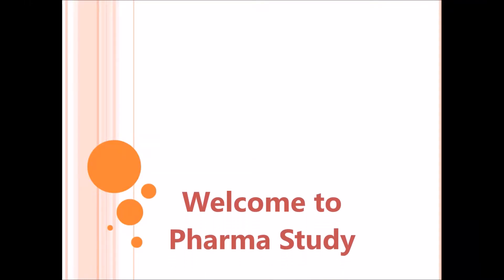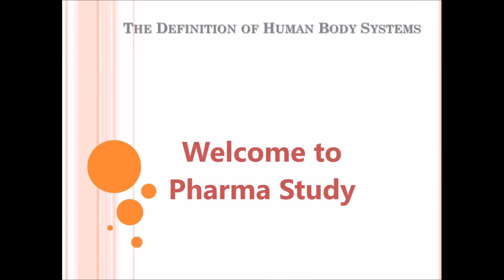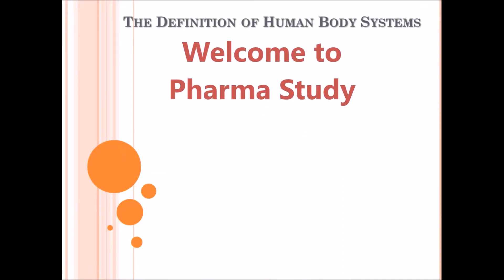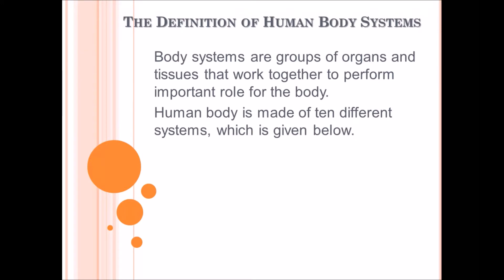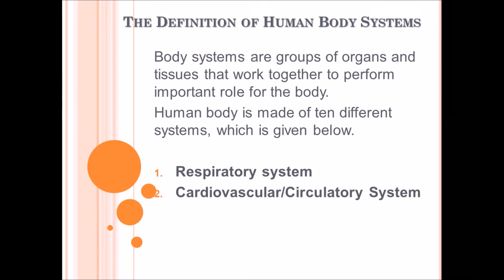Today we will discuss the definition of the human body system. A body system is a group of organs and tissues that work together to perform important roles for the body. The human body is made of 10 different systems: first is the respiratory system, second is the cardiovascular or circulatory system, third is the digestive or excretory system.